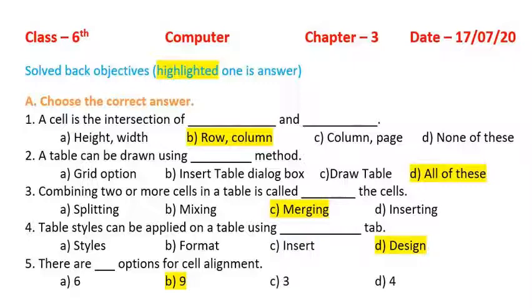The third one: combining two or more cells in a table is called dash. Students, we know when we combine cells — it's not splitting, not mixing, but merging. So the answer will be merging. The combining of two or more cells is called merging.